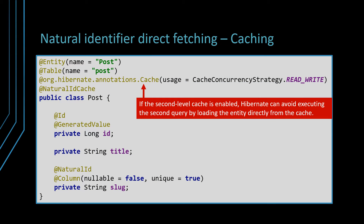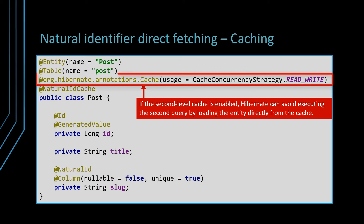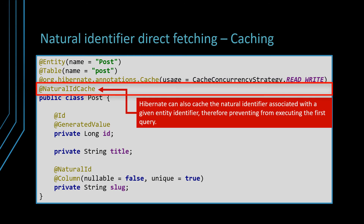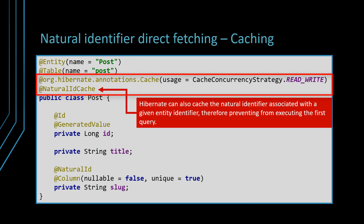If the entity is annotated with the Hibernate Cache annotation and the second level cache is activated, then you can skip the execution of the second query if the entity is stored in the second level cache. You can also skip the first query, which resolves the entity identifier via the provided natural ID, if the second level cache is activated and the entity uses the NaturalIdCache annotation. With both these annotations in place, the entity can be fetched from the cache, therefore bypassing the database.